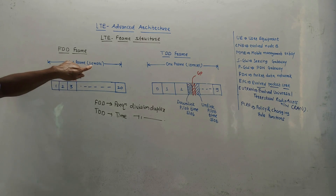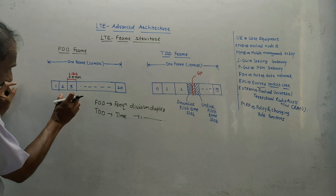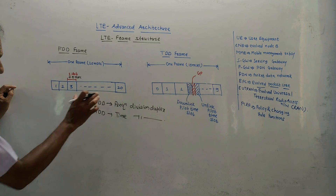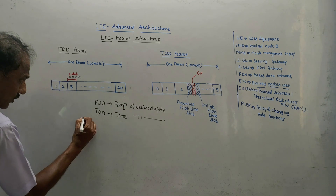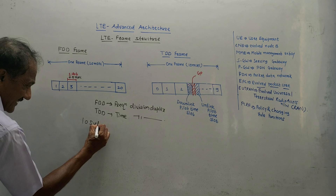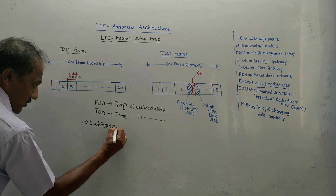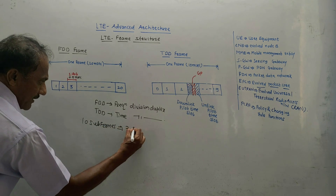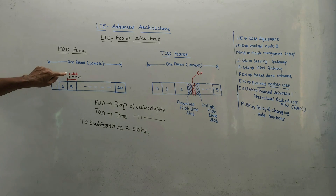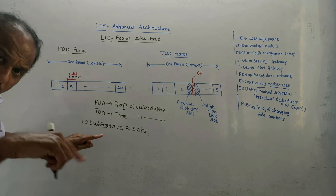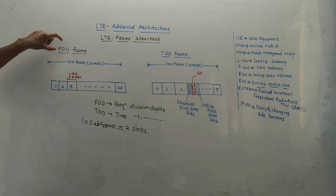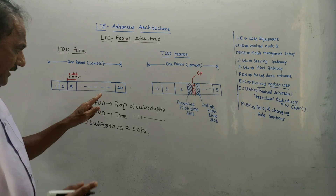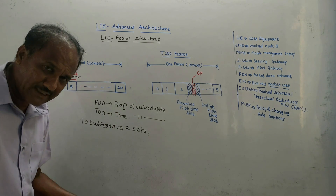The first diagram shows the frame structure for FDD. One frame has a time duration of 10 milliseconds. There are 20 slots, each of length 0.5 milliseconds, and 10 sub-frames. Each sub-frame consists of two slots, so the duration of one sub-frame is 2 × 0.5 = 1 millisecond. Since it is frequency division duplexing, different frequencies are used for uplink and downlink.